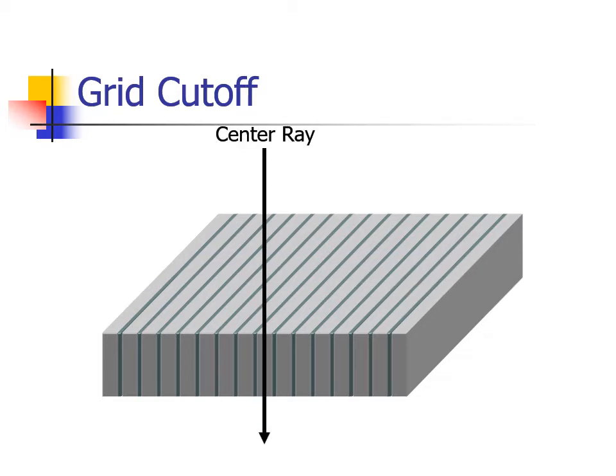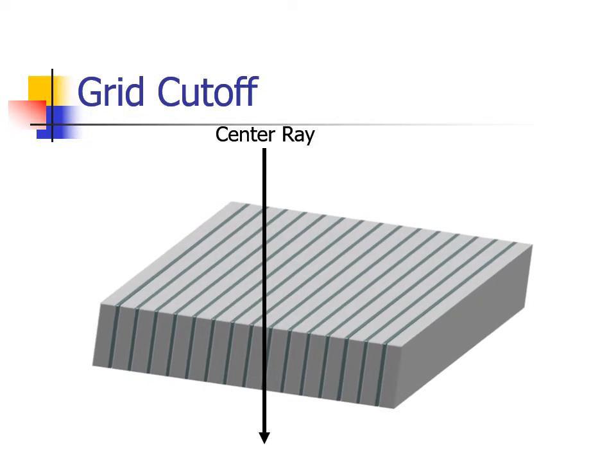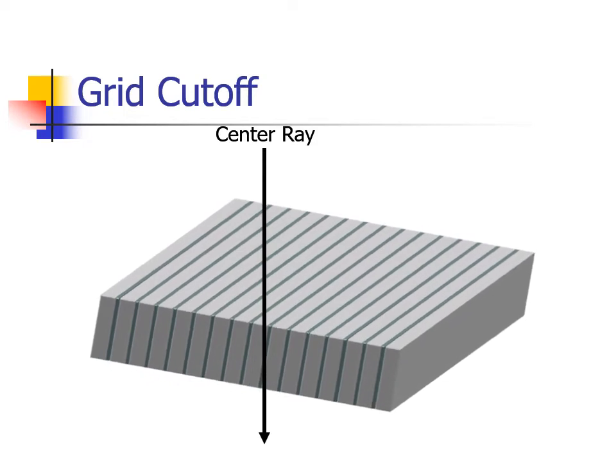To illustrate this point, let's drop a single vertical ray at the center line of the grid. It easily penetrates the interspace material without a problem. Tilt the grid to the right 10 degrees, and the line is stopped by the lead in the grid.